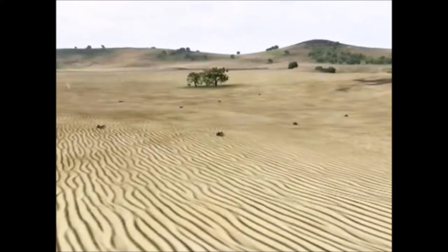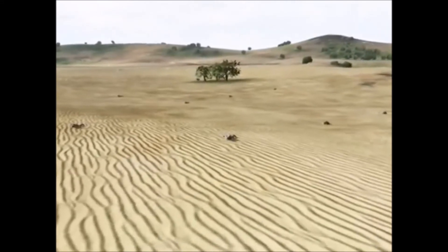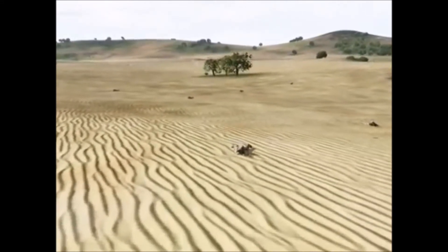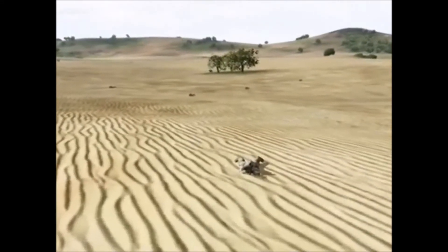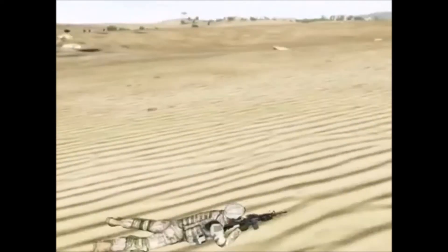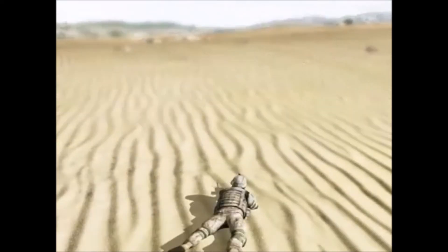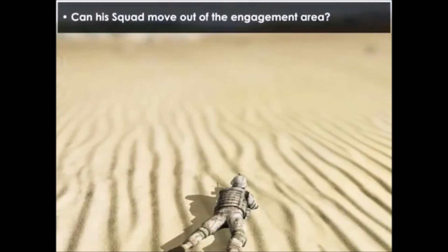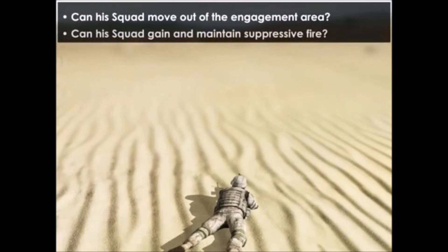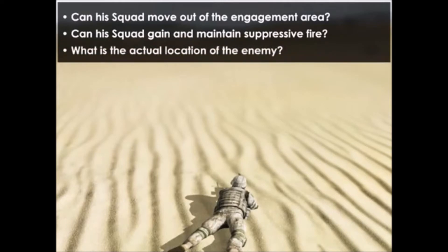The squad leader assesses the situation based on the lead team leader's report and his own situational awareness, such as the type and effectiveness of fire he is hearing. He asks himself these types of questions: Can his squad move out of the engagement area? Can his squad gain and maintain suppressive fire? What is the actual location of the enemy?